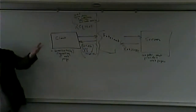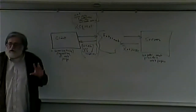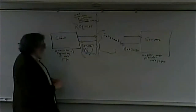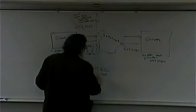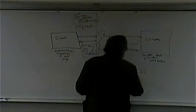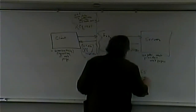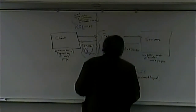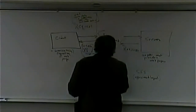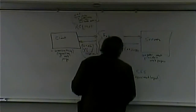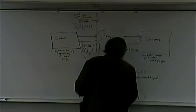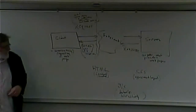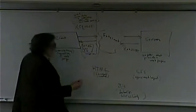HTML is the actual content — the text, the links, all the stuff that makes up the web page, along with how it's structured. CSS handles the layout — is it one column or two, is it green or yellow — along with the appearance. JavaScript provides the behavior, so if you click on a link maybe a picture pops up in the middle of your screen. This is true of every single web page: the client makes a request and the server responds with HTML, CSS, and JavaScript.